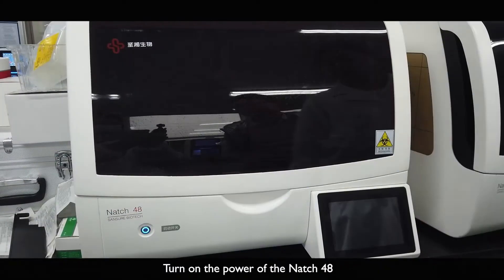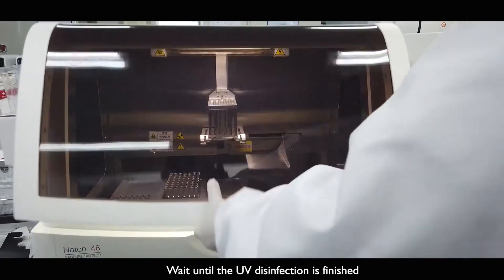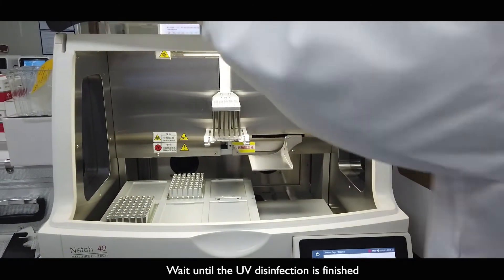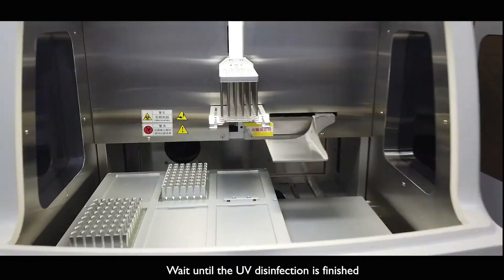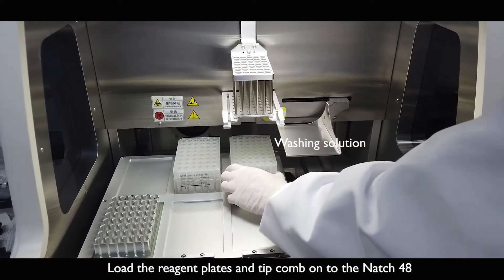Turn on the power of Natch 48. Turn on the UV lamp. Wait until the UV disinfection is finished. Load the reagent plate and tip comb onto the Natch 48.